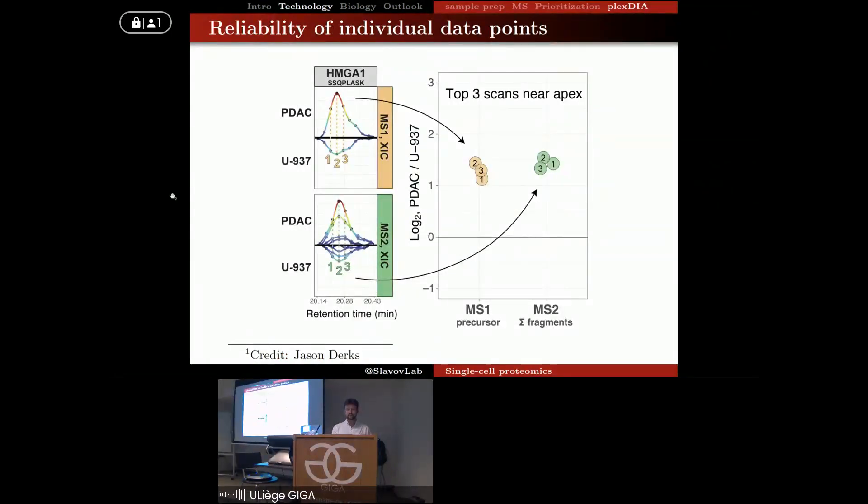Just as a raw statistic, especially for those familiar with single-cell RNA sequencing, each peptide protein in our analysis on average is detected with 30 to 100 copies, and per single cell we count a few million copies, depending on the instrument and depending on the parameters.